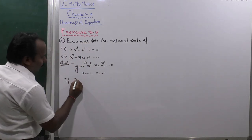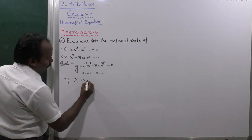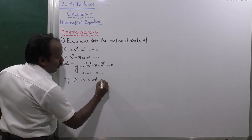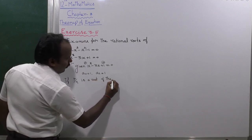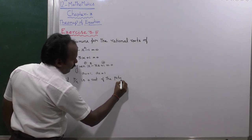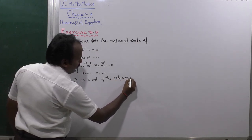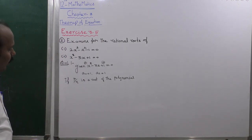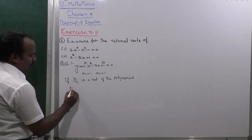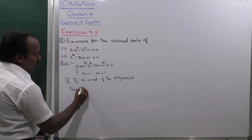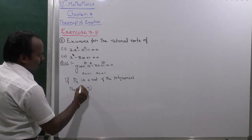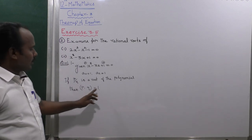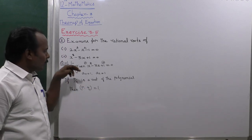If p by q is a root of a polynomial, the statement is: p over q equals 1. So this condition is satisfied by the given sum. Why? Because the first number coefficient and the constant should both be 1.